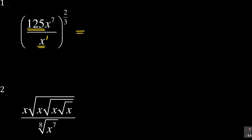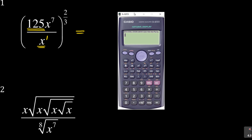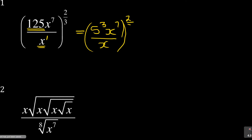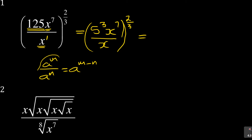To express 125 in terms of exponents, use your calculator: press SHIFT then FACT, and it will factorize 125 as 5 to the power of 3. So your expression now has 5 to the power 3, times x to the power 7, all over x, and then the whole thing to the power of 2 over 3. Now focus: there's an x at the bottom and x at the top, so let's deal with that using the division law.